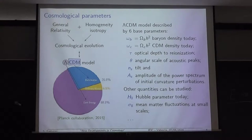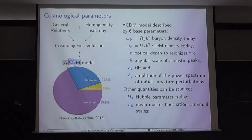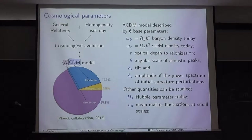The standard model is the Lambda-CDM model. The name comes from dark matter, which is 27% of the energy density of the universe, and dark energy, which is 68%. This model can be described by six parameters, from which it is possible to derive, for example, the Hubble parameter, the matter fluctuations such as σ8, and also neutrino masses or similar quantities.